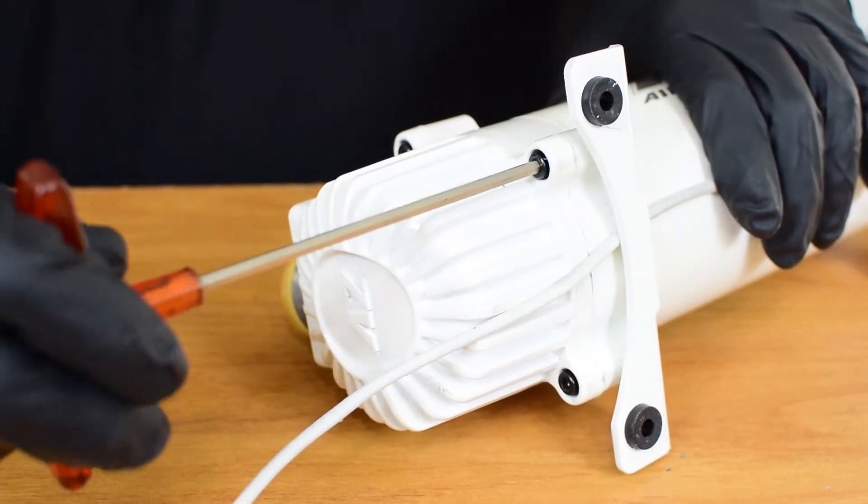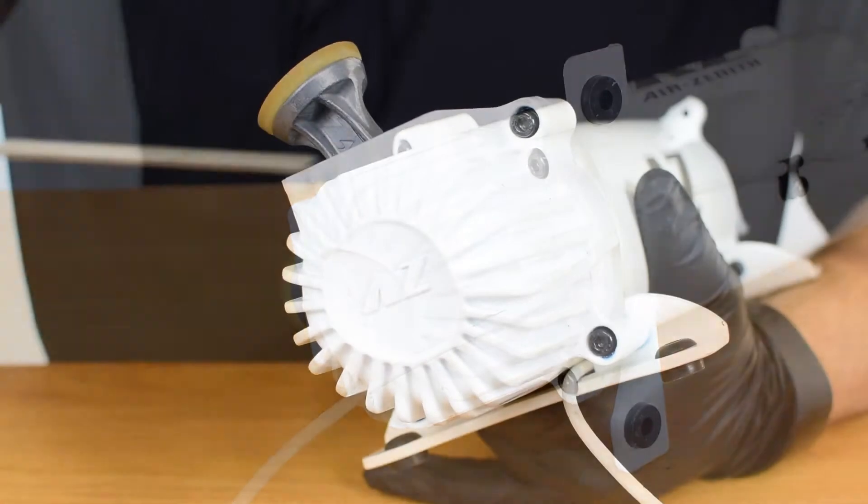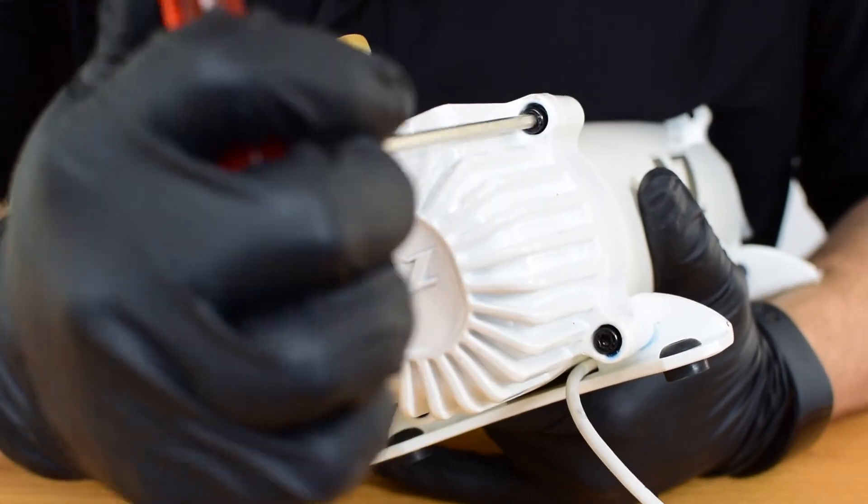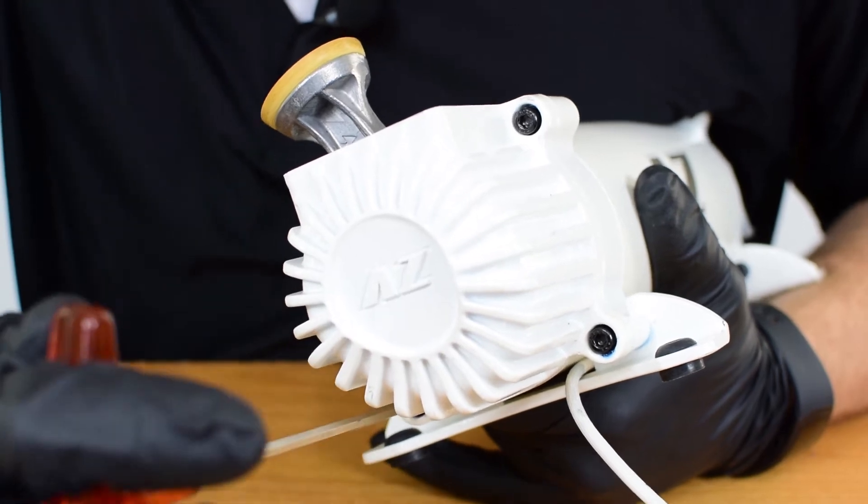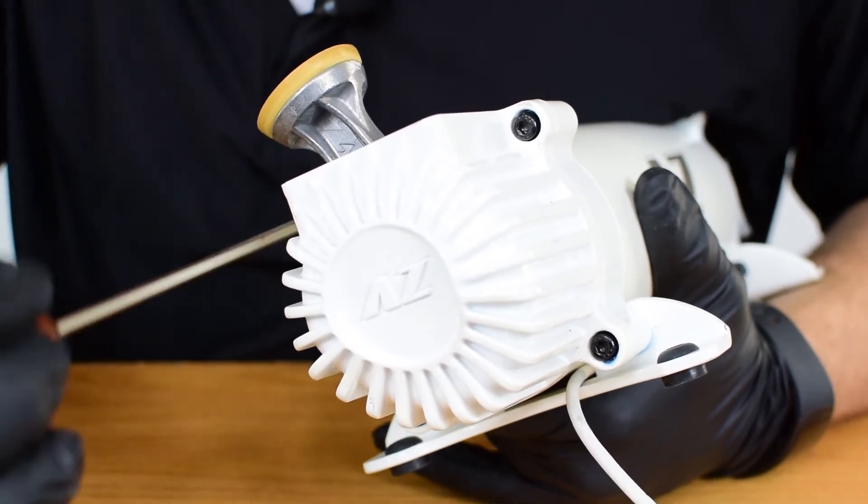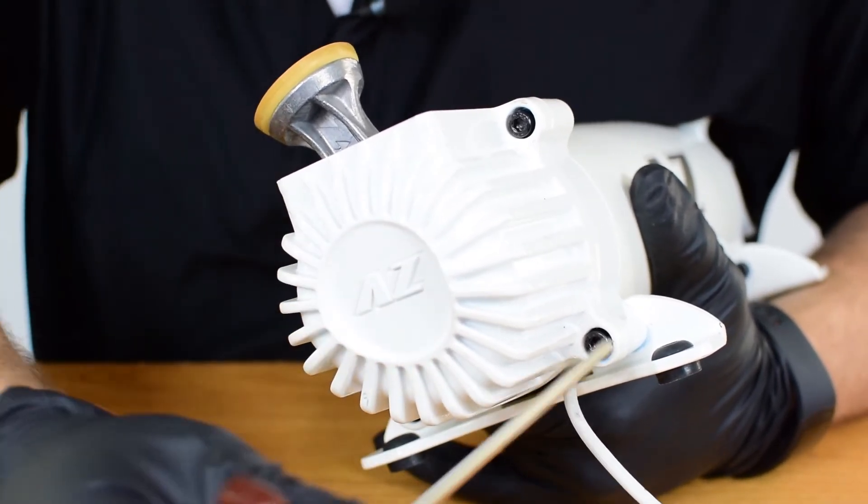Once all four bolts are in place, you're going to do a cross pattern to tighten the bolts to prevent cracking or warping of the metal chassis. So you'll do diagonals and then go to the other opposite corner and do the diagonal to tighten everything down.